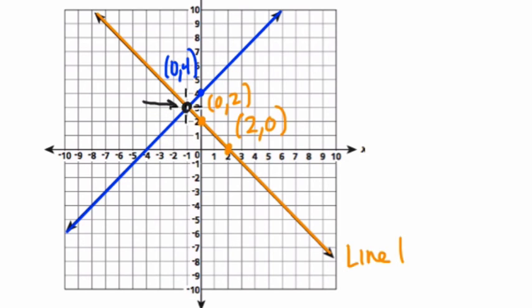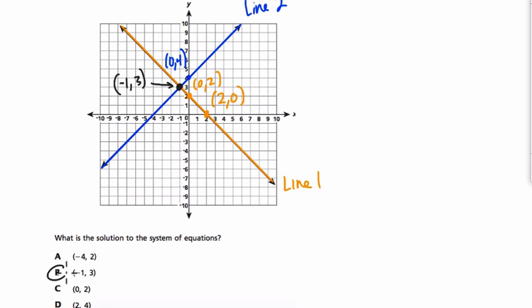And the point here is at x = -1. So it goes back 1 and up 3. It's (-1, 3). That is our solution to this system, and that is answer choice B.